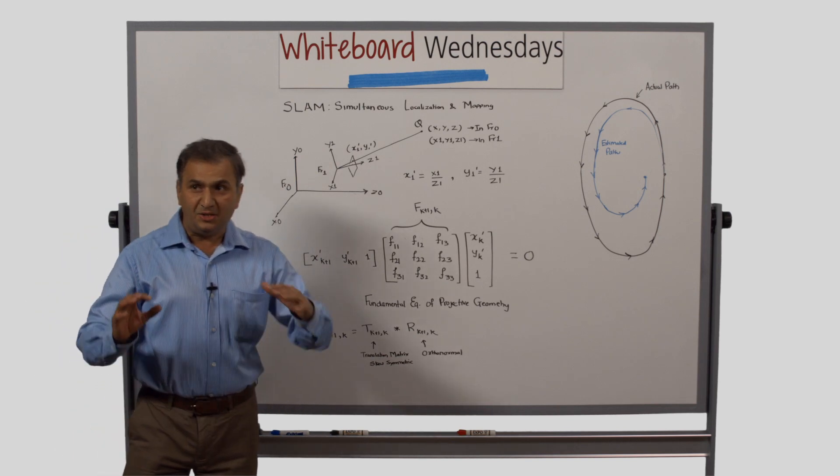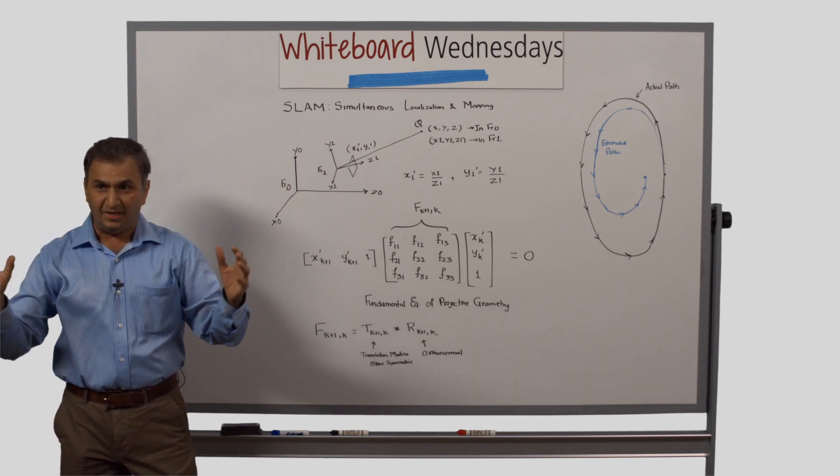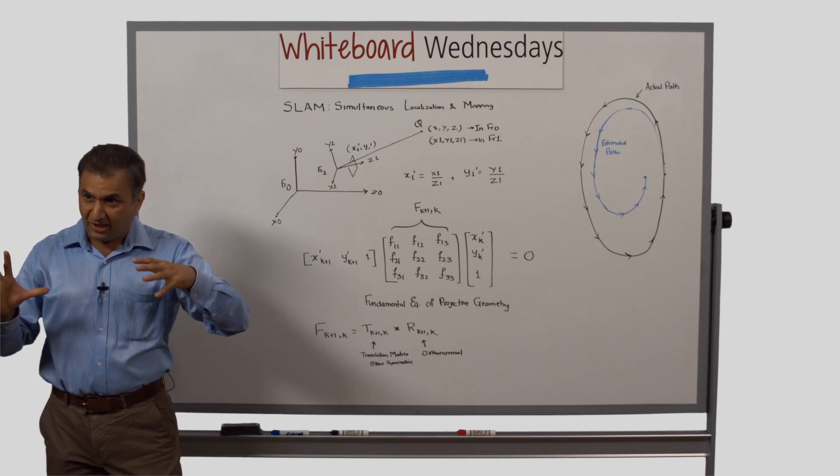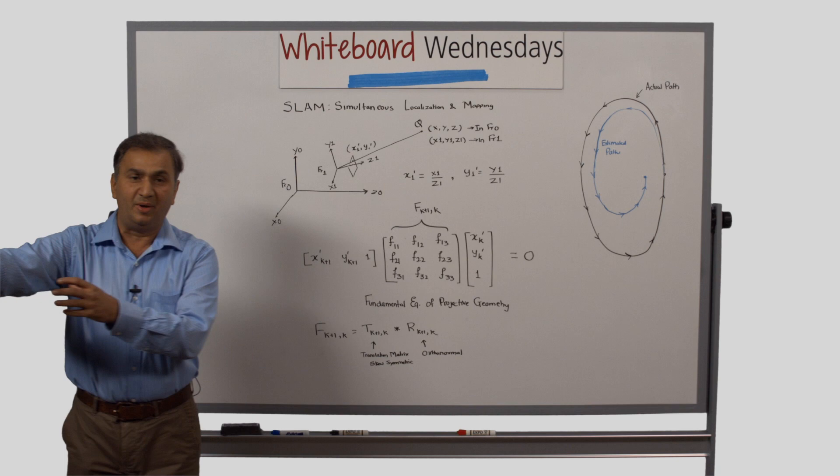What is needed over here is to detect several key points in the surroundings and track how these key points, the projected coordinates of these key points, change as the camera moves.